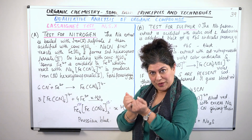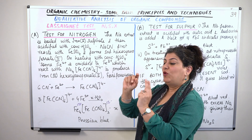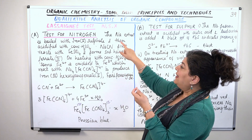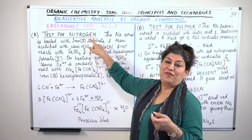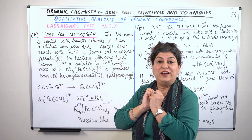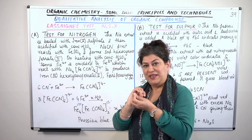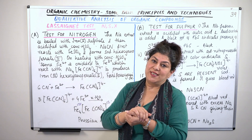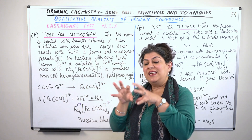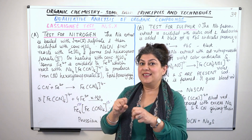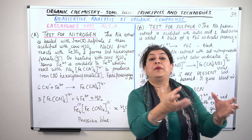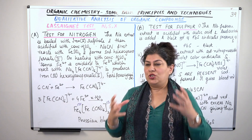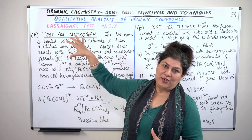The test for nitrogen is done in two steps. We first take the sodium extract in a test tube and add ferrous sulfate (FeSO₄). Once ferrous sulfate is added, in the next step we heat it up with concentrated sulfuric acid, and a Prussian blue color appears. The formation of the Prussian blue color shows us the presence of nitrogen.